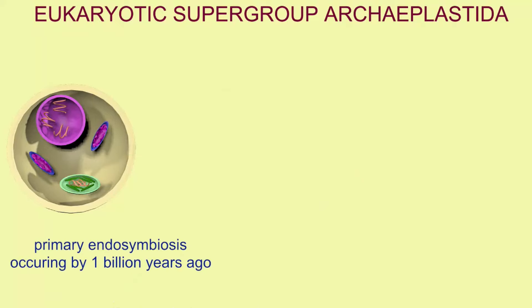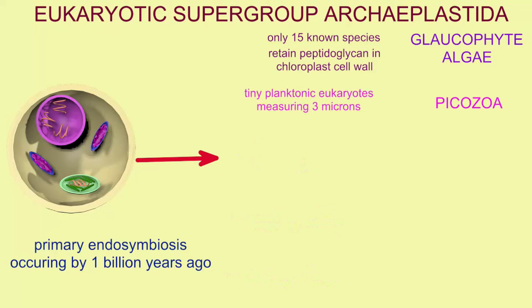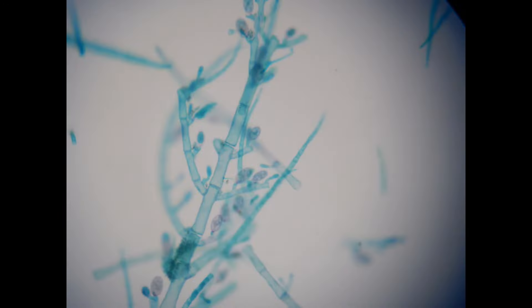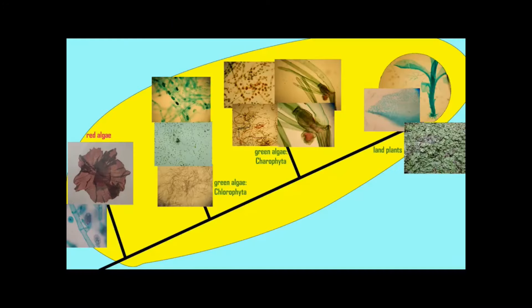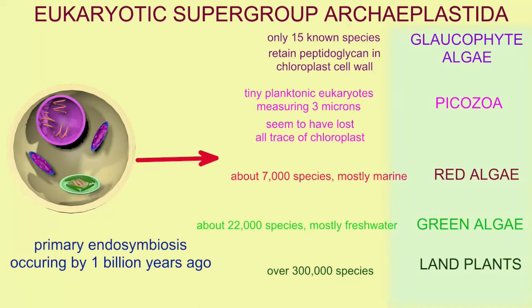The glaucophyte algae are a small group with only 15 known species, with the primitive condition of peptidoglycan in the cell wall of chloroplasts. The picazoans are tiny eukaryotes of plankton, measuring only 3 microns in size, which seem to have lost all trace of the chloroplast. The red algae include about 7,000 species, mostly marine. The green algae number about 22,000 species, mostly freshwater. And the land plants represent the majority of Earth's biomass, with more than 300,000 species.